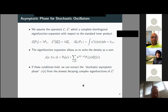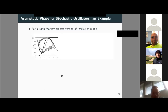If these conditions hold, we can extract a stochastic asymptotic phase — denoted ψ(x) — from the slowest-decaying complex eigenfunctions of L†. Let me now show an example from that paper to illustrate this.